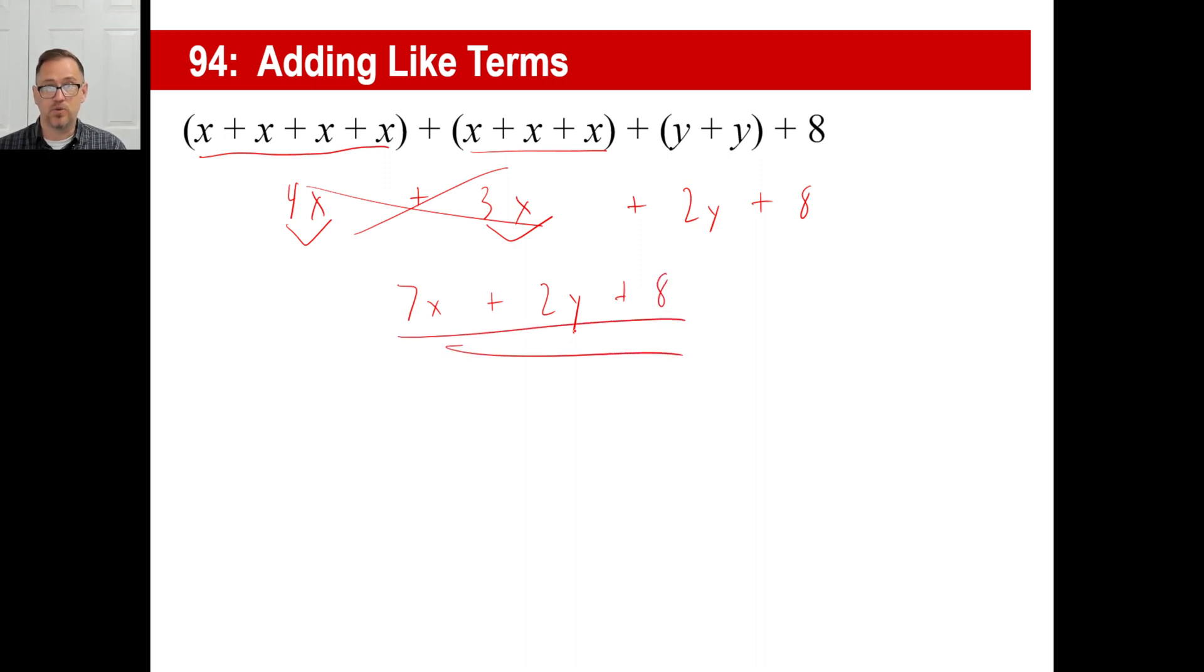The really simplified version of this expression would be seven x plus two y plus eight. Now you notice, there's nothing else we can do with that. That's like saying seven apples plus two bananas. You can't go, oh, that's going to be seven plus two, nine, and then an x and a y, and then a plus, oh, is that 17 now? No, it's none of that. You stop right there. You're done. You can't add those things together. You're finished.